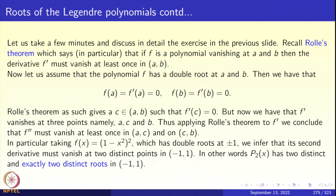Rolle's theorem applied to f(x) gives us a point c in the open interval (a, b) such that f'(c) = 0. Now look at f'(x) — it is also a polynomial and f'(x) vanishes at a, c and at c, b. By application of Rolle's theorem, f''(x) must vanish at least once in the open interval (a, c) and at least once in the open interval (c, b). Thus f'' has two roots in the open interval (a, b), and these two roots are distinct since they lie in disjoint open intervals.